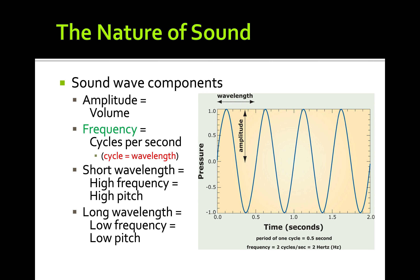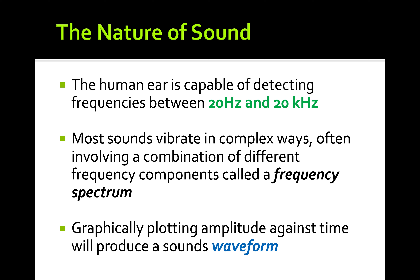For the review: in the last lecture we discussed different properties of sound — frequency, wavelength, and amplitude, which corresponds to the volume of the sound. The human ear is capable of detecting from 20 Hz up to 20,000 Hz. Most sound vibrates in complex ways involving combinations of different frequencies, and we looked at constructive and destructive interference, and how we can plot a sound wave against time to get a sine wave graph.